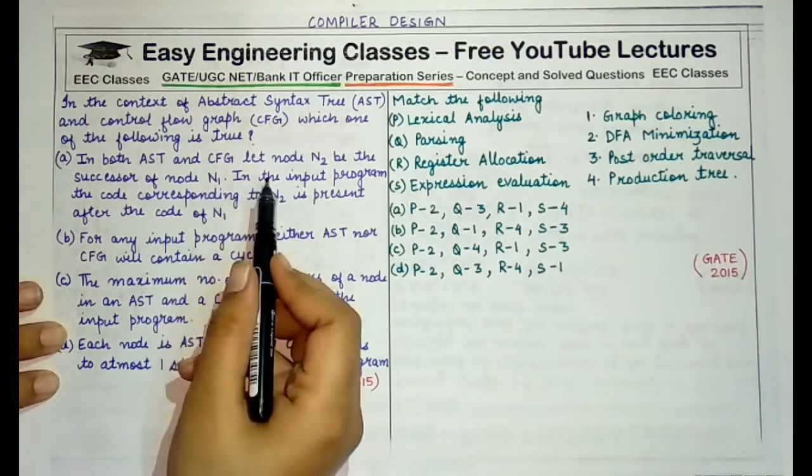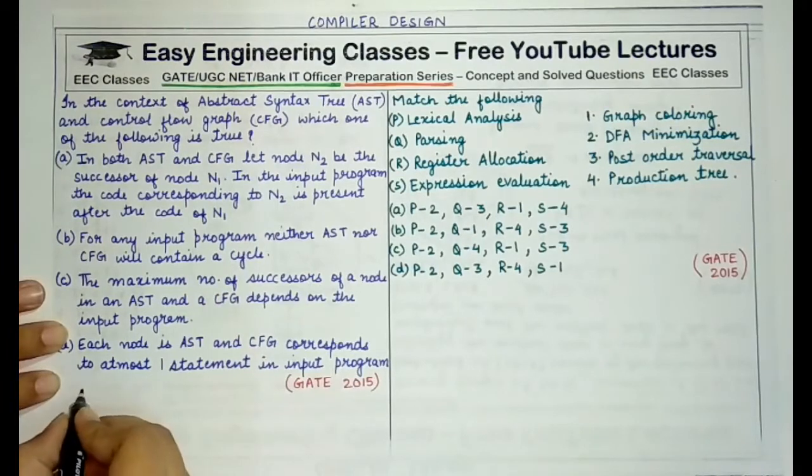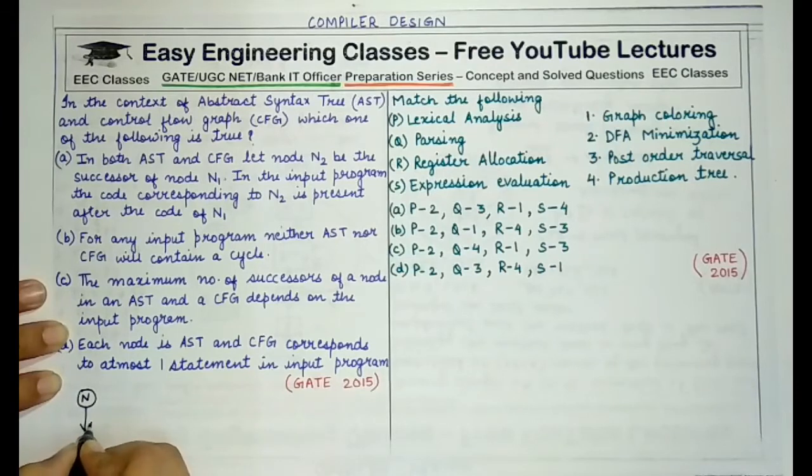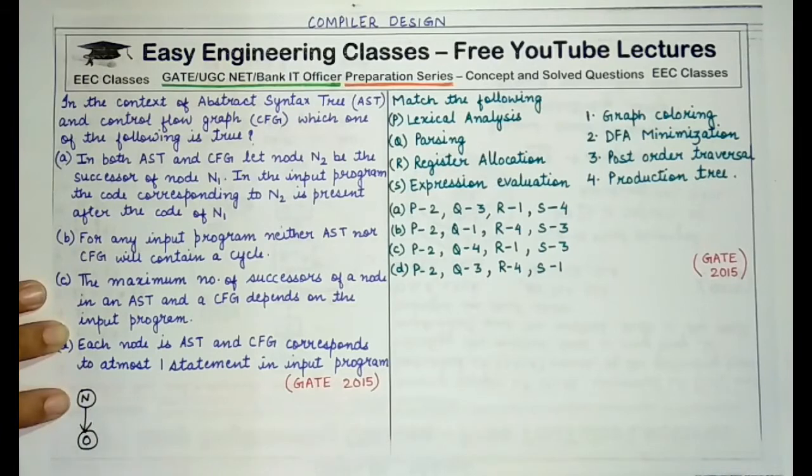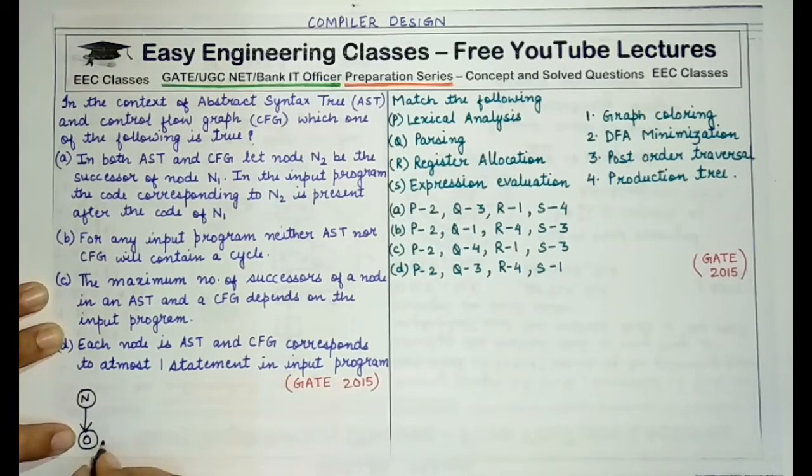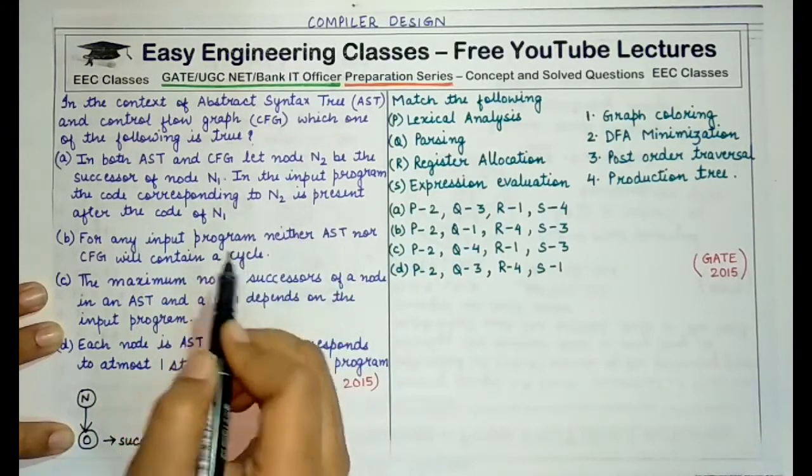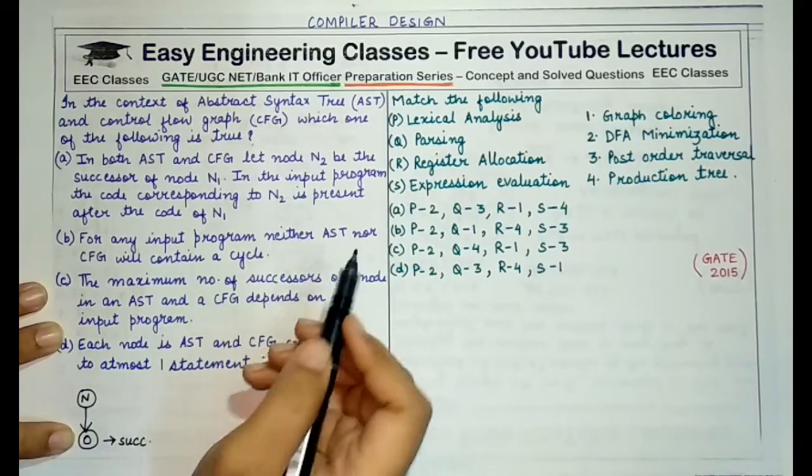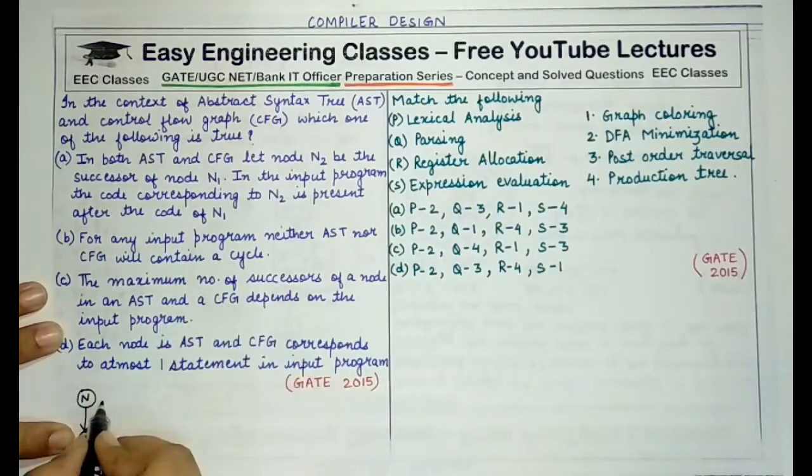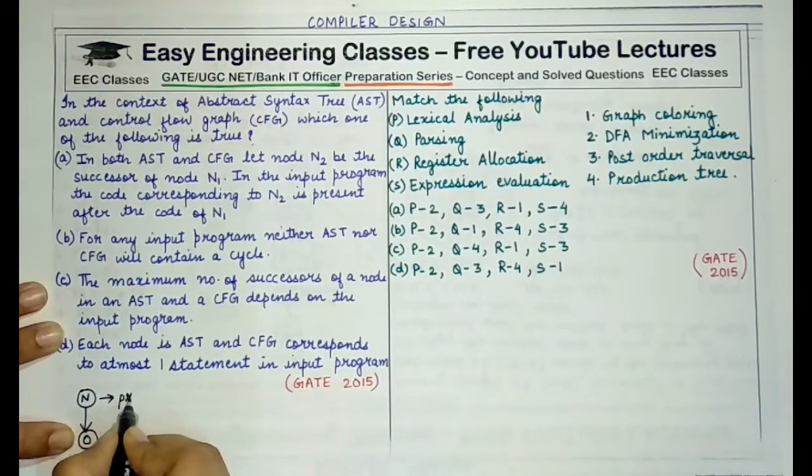Because firstly, what is a successor of a node? Any node that has a direct edge from a particular previous node is known as the successor of another node. So since there is an edge in this case from N to O, so O is the successor of N. But it is not always true that the node which is the successor, that node's code will be written after the code of the predecessor node. This is the predecessor node, and why is it not true?